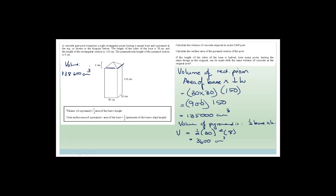We then add the little pyramid at the top. The volume of the pyramid is one-third of the area of the base times the height. The base is 30 times 30, and the height is 8 cm. So the volume is one-third times 30 squared times 8, giving 3,600 cubic centimeters. The total volume of the post is 135,000 plus 3,600 equals 138,600 cubic centimeters.